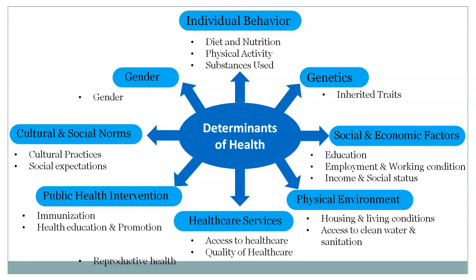The next determinant is gender. Men and women at different ages suffer from different types of diseases — some diseases are very prone in females and some in males. Reproductive health, meaning factors affecting maternal and child health, is also included as a gender-related determinant.